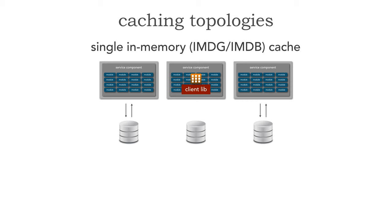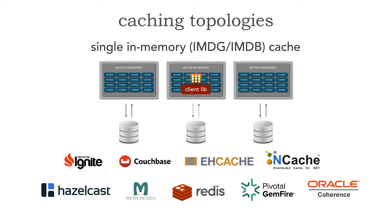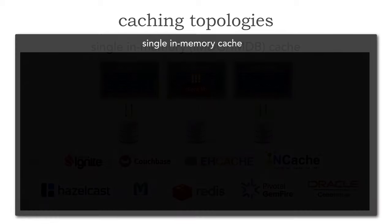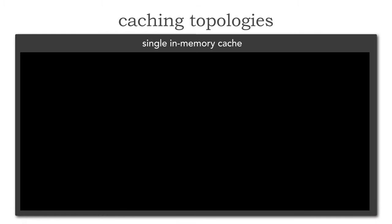If something's not in the cache, then I would go back to the database. Almost every caching topology or caching product supports an in-memory data grid or in-memory database cache. Let's take a look at Apache Ignite, because I want to show you some aspects about how to use this in-memory cache.